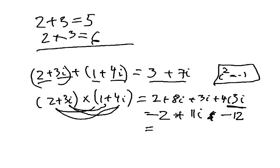So the result of this multiplication of 2 complex numbers is going to be 2 minus 12, negative 10, plus 11i. This is the result of this complex multiplication.